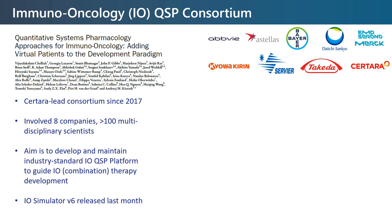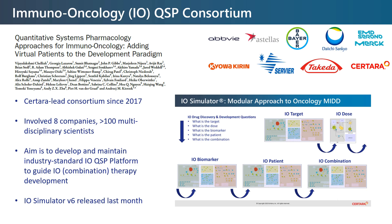A key question is how to select and validate biomarkers in a timely manner so they can be applied with confidence for decision making in early oncology dose-finding studies. This has been a main focus of the Immuno-Oncology (IO) QSP Consortium, which Satara established in 2017, and which has now involved eight major pharma companies and well over a hundred multidisciplinary scientists and clinicians. The consortium has been developing the IO Simulator, the industry-leading QSP platform for IO drug development.